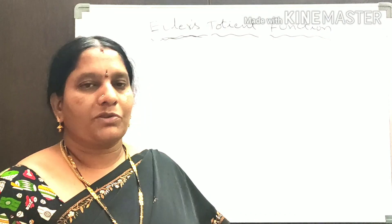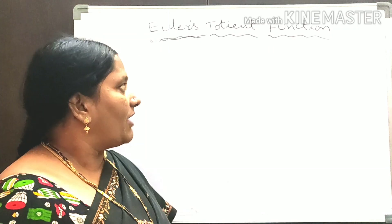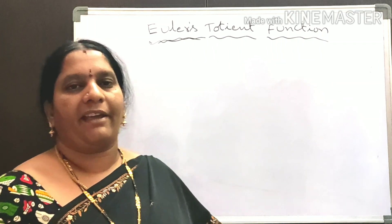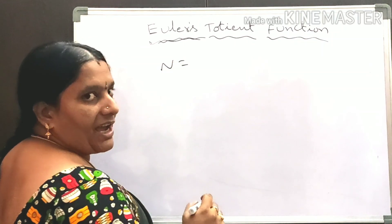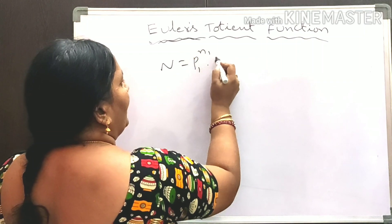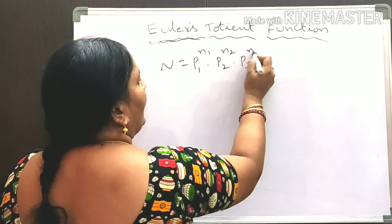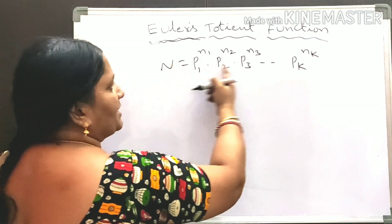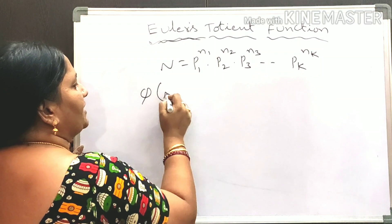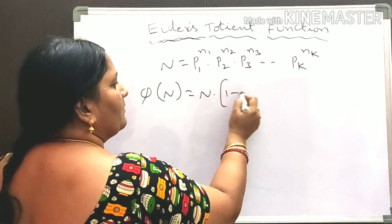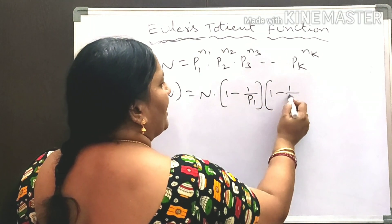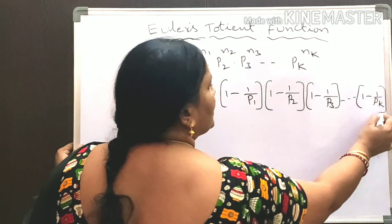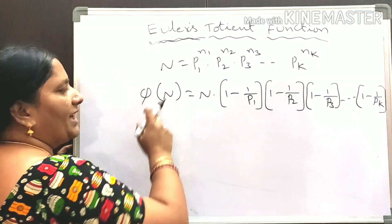If n is a natural number greater than 1, according to the Fundamental Theorem of Arithmetic, every natural number greater than 1 can be expressed as a product of primes in a unique way. So n can be expressed as p1^n1 × p2^n2 × p3^n3 … × pk^nk. Then the Euler-Totient function is phi of n = n × (1 − 1/p1) × (1 − 1/p2) × (1 − 1/p3) … × (1 − 1/pk).